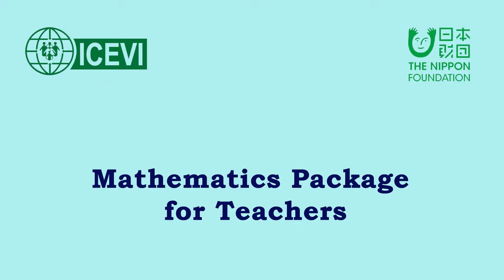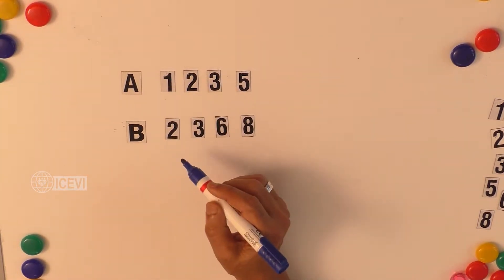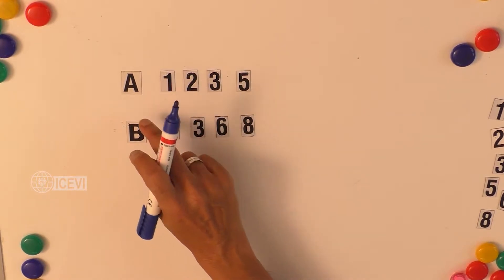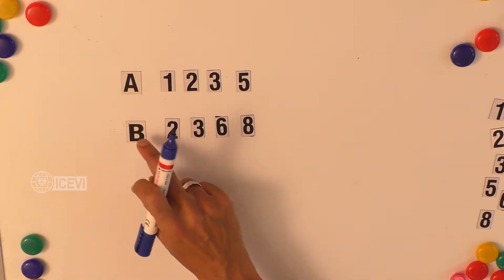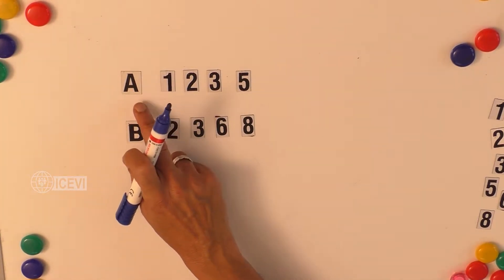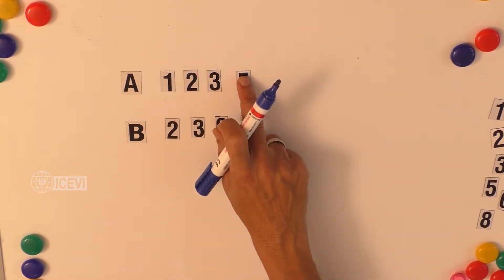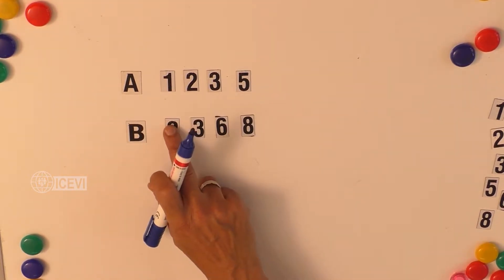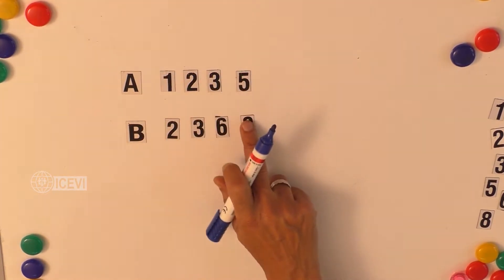The ICBI Nippon Foundation mathematics package for teachers. The title of this video is 'An Identity in Set Language.' We consider two sets A and B that are overlapping, meaning they have something in common. Set A has four elements: {1, 2, 3, 5}, and set B has four elements: {2, 3, 6, 8}. The elements have brain markings to help visually impaired children identify them clearly.